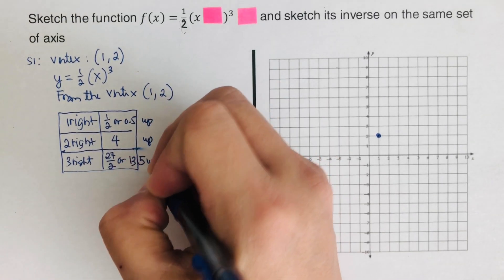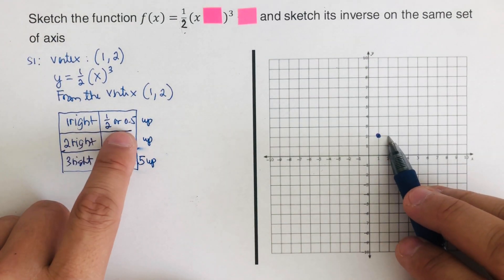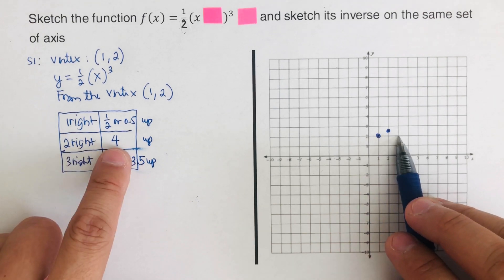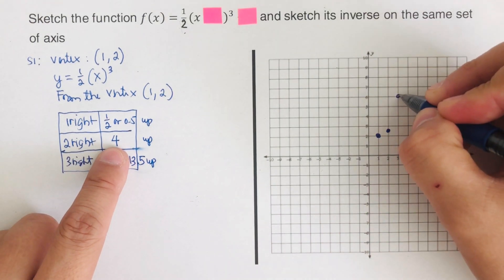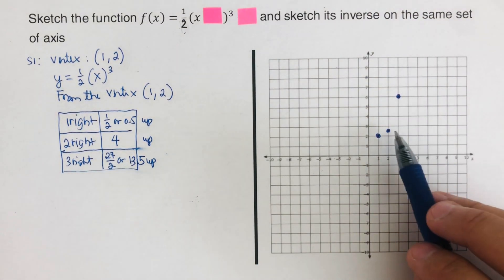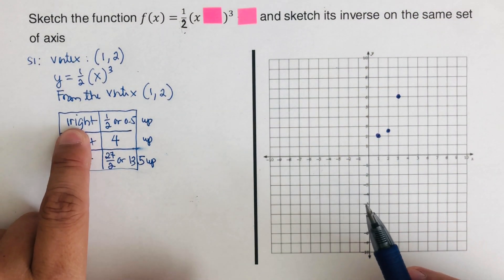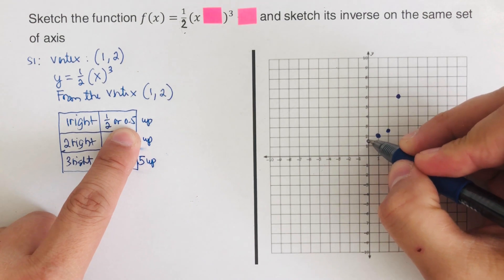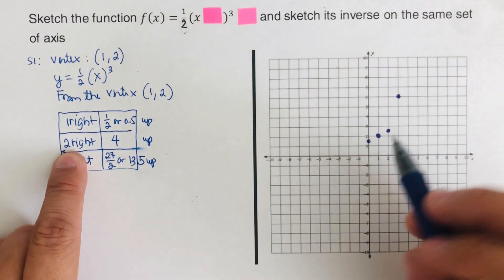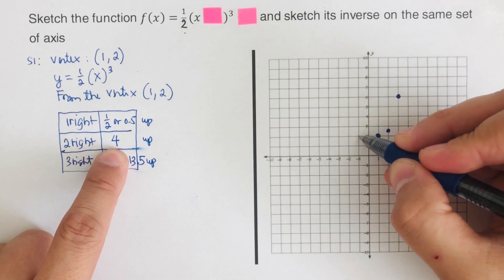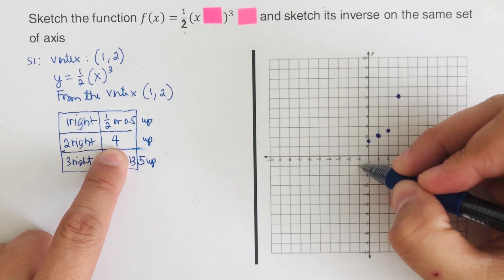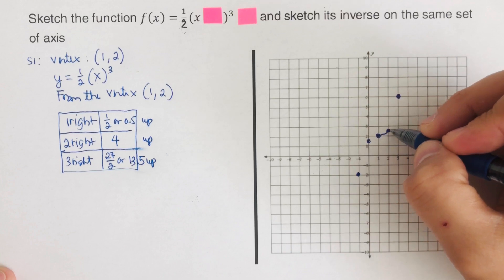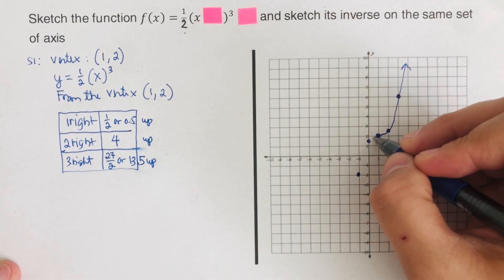Then 2 right and 4 up — 1, 2, 3, 4. Since this is a cubic function, we do the opposite across the vertex: 1 left and 0.5 down, then 2 left and 4 down. We connect the dots to create the cubic graph.